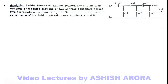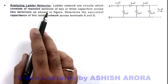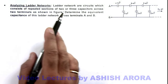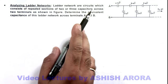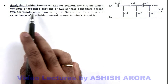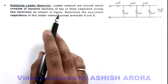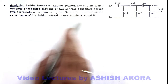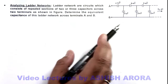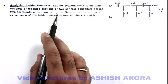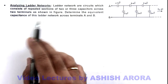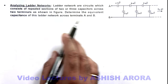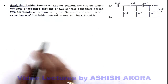In this illustration, we'll analyze ladder networks. It is given that ladder networks are circuits which consist of repeated sections of 2 or 3 capacitors across 2 terminals, as shown in the figure. We are required to determine the equivalent capacitance of this ladder network across terminals A and B.